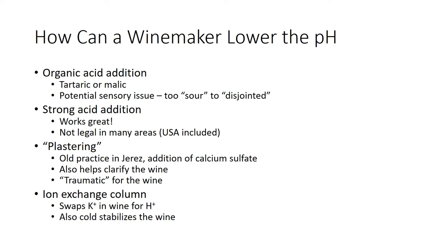How can a winemaker lower the pH? The examiner's report said this wasn't the focus, but it illustrates points about the nature of pH and titratable acidity. A winemaker can lower pH with an organic acid addition — usually tartaric or malic — but this risks sensory issues: the acid tastes too sour or disjointed. And because the juice is a buffered solution, you can add a large amount of organic acid and the pH doesn't change, but you've dumped in acid and the wine tastes too sour.